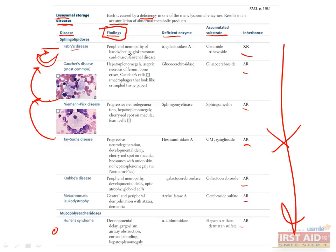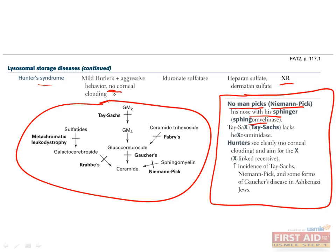Focus on the distinguishing characteristics of each disease. Fabry's is notable for angiokeratomas, Gaucher's for bone necrosis, and metachromatic leukodystrophy for ataxia. Niemann-Pick and Tay-Sachs both have cherry red spots in the macula, but Niemann-Pick has hepatosplenomegaly whereas Tay-Sachs does not. Hurler's and Hunter's syndromes also have a lot in common, such as a flattened bridge of the nose and a prominent forehead, but Hurler's is notable for corneal clouding, which is not present in Hunter's.